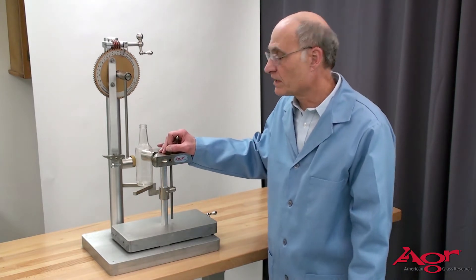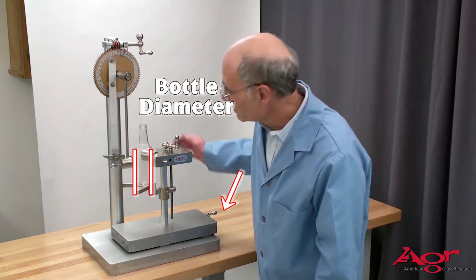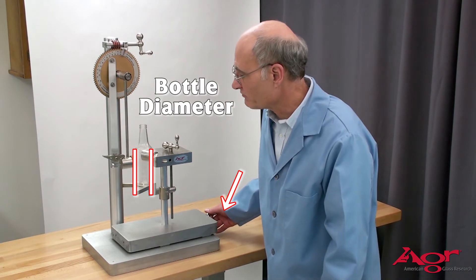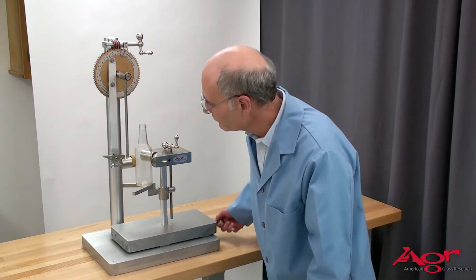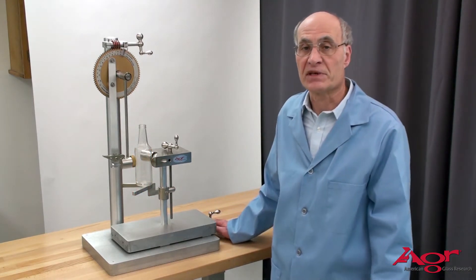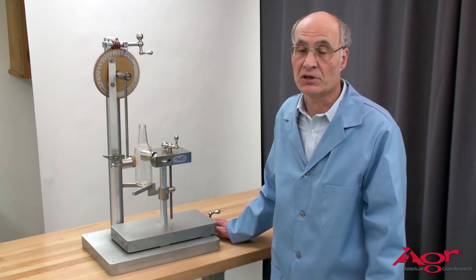The second thing you want to worry about is bottle diameter. In this case the tester is set up for a slightly bigger bottle so I just crank it over until the bottom of the pendulum touches the bottle at the bottom dead stroke.